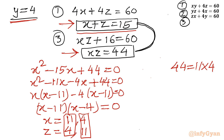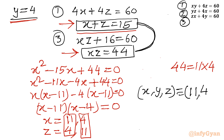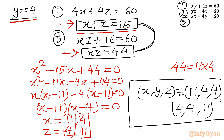So x equals 11 or x equals 4. Writing the ordered triples x, y, z: the first set is x equals 11, y equals 4, z equals 4; and the second set is x equals 4, y equals 4, z equals 11. So we have got two ordered pair solutions when y equals 4.